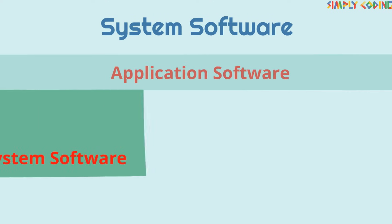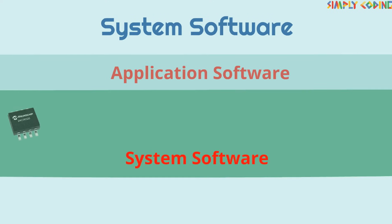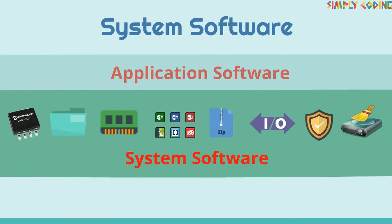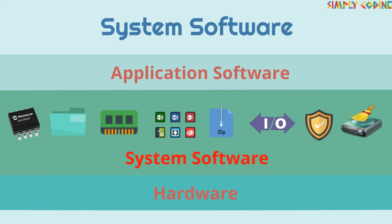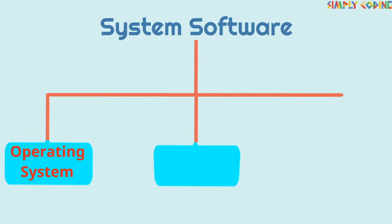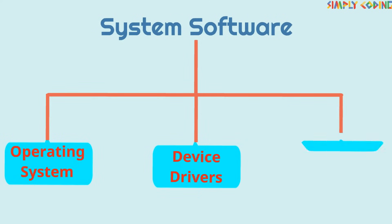The application software sits on top of system software. System software typically comes along with the computer and manages the computer hardware and provides the basic functionality required by users. System software is of three types: operating system, device drivers, and utilities.